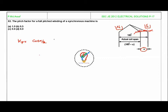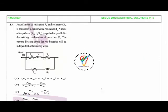For a full pitched winding, alpha is zero. Once alpha is zero, the pitch factor kp equals cos zero by 2, so cos zero is 1. The pitch factor is 1 for full pitched winding, so kp is 1.